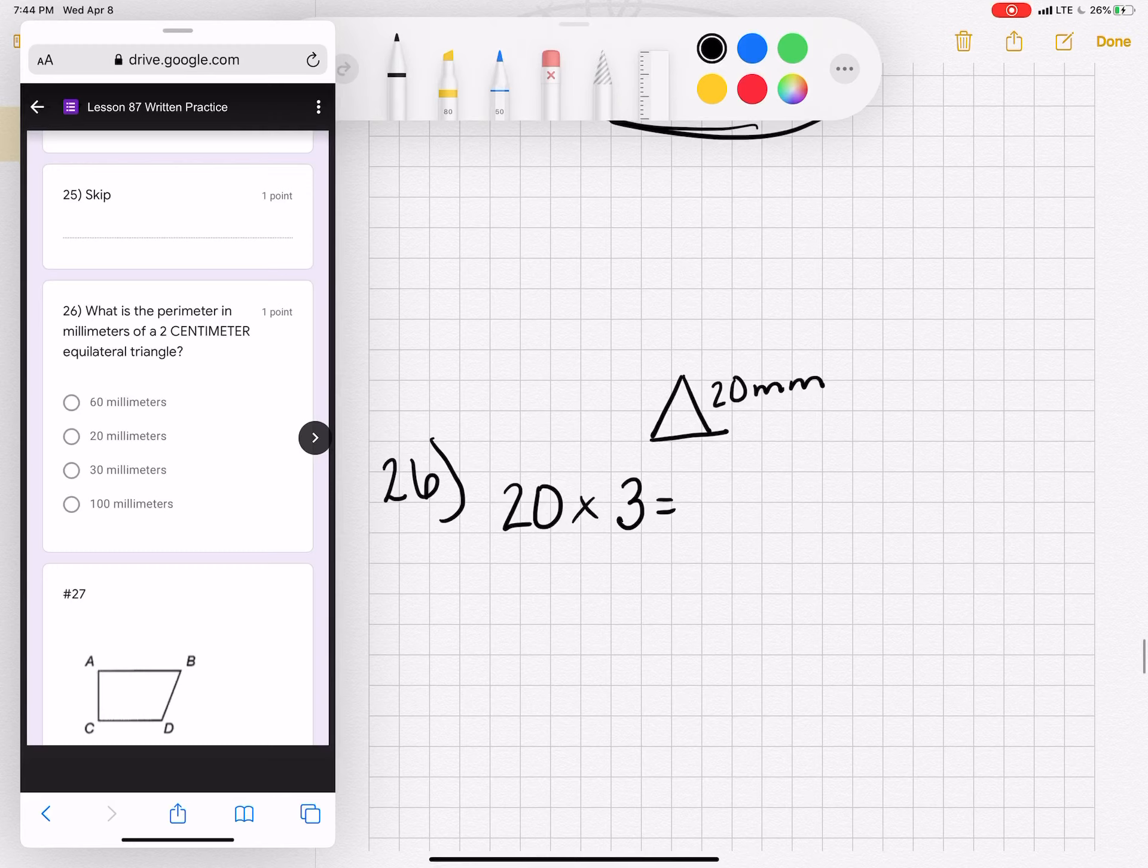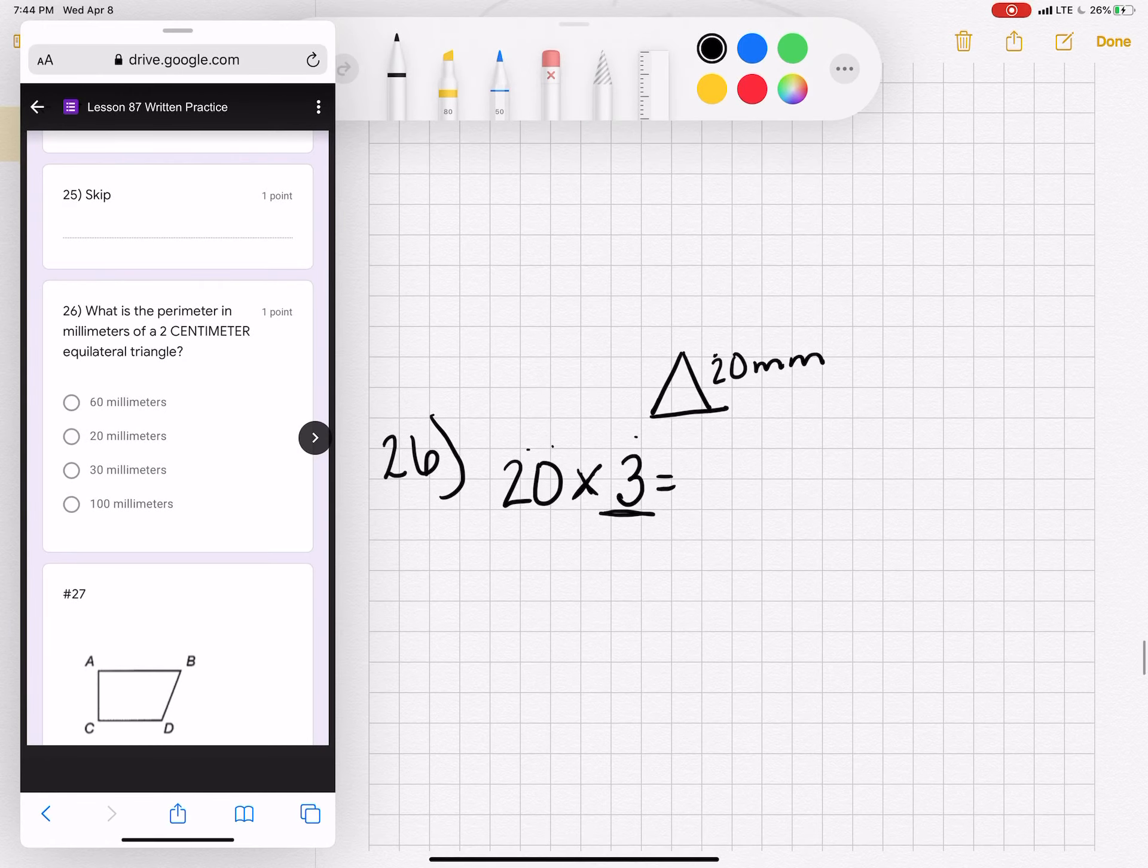Number 26. What is the perimeter in millimeters of a two-centimeter equilateral triangle? Perimeter of an equilateral triangle is going to be only times three sides instead of times four because there are only three sides. And two centimeters would be 20 millimeters. So I have 20 millimeters times three sides equals 60 millimeters.